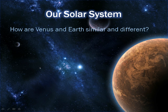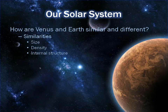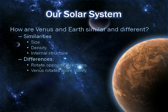How are Venus and Earth similar and different? Looking at the similarities first: their size, density, and internal structure are all very similar. The size of Earth and Venus are so similar that they're sometimes called the sister planets. The densities are very similar as well, and the internal structure of the core and tectonic plates occur on both planets. There are a lot of differences, however — first of all, they rotate in opposite directions. Venus also rotates much more slowly than Earth, so it has a much longer day.